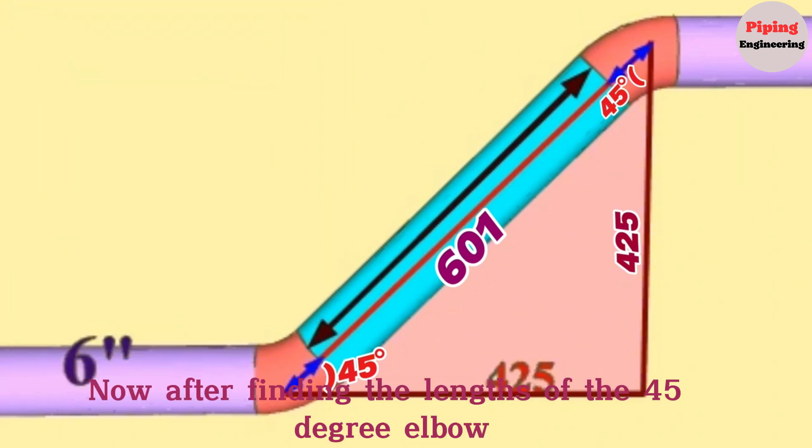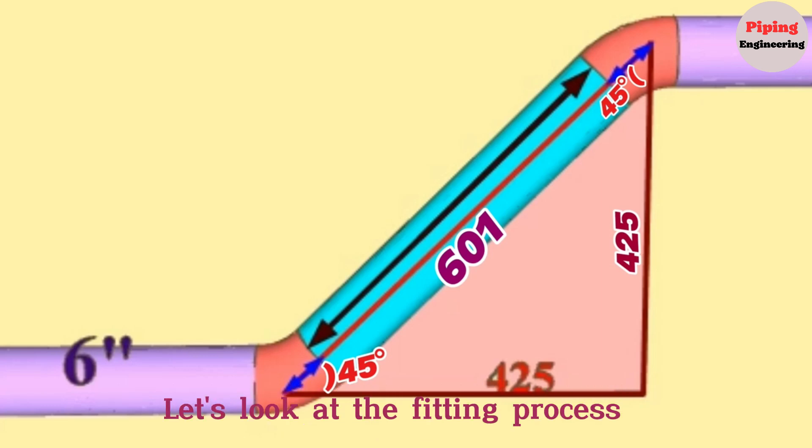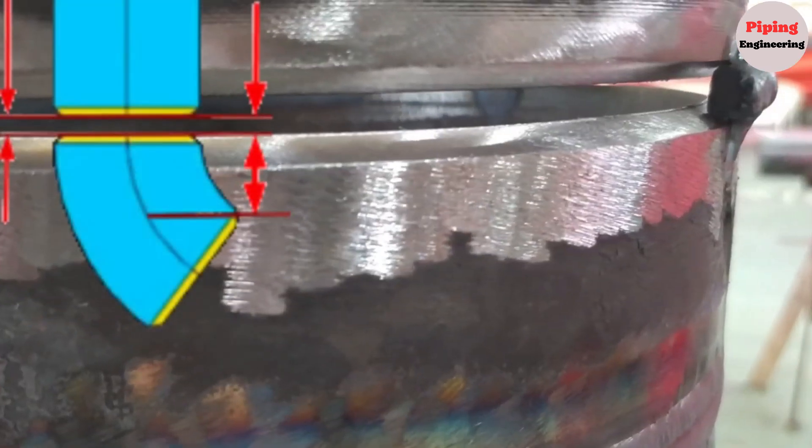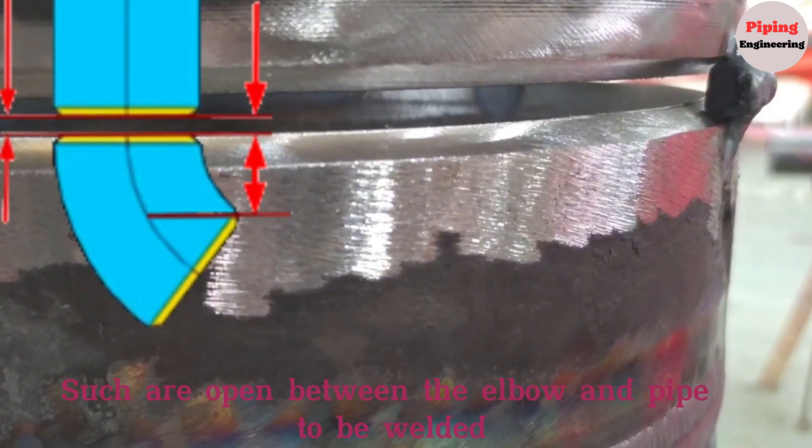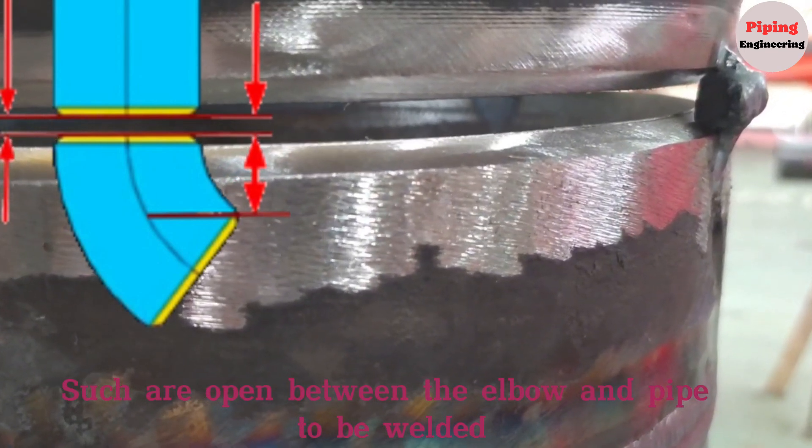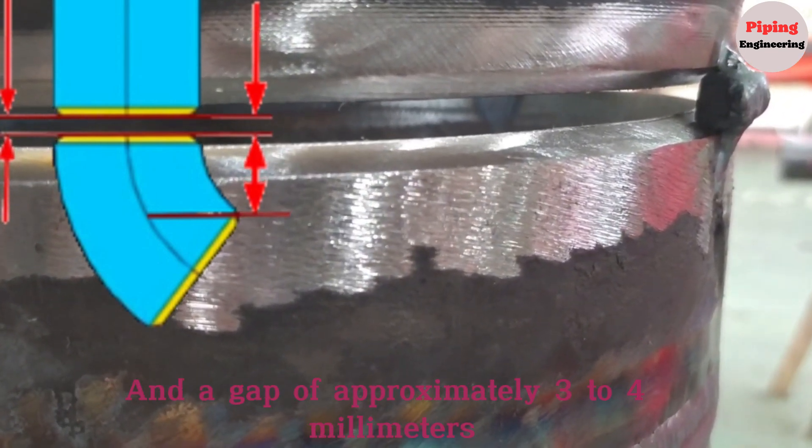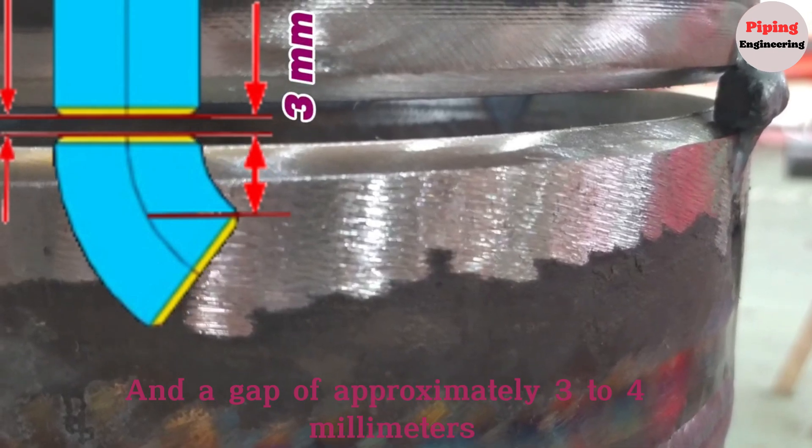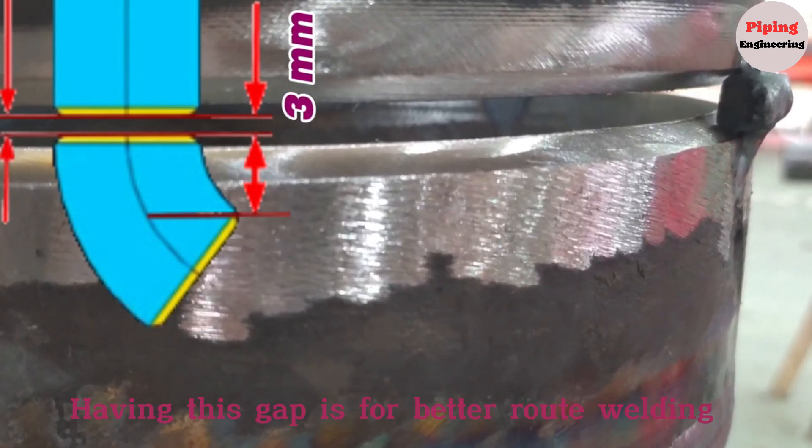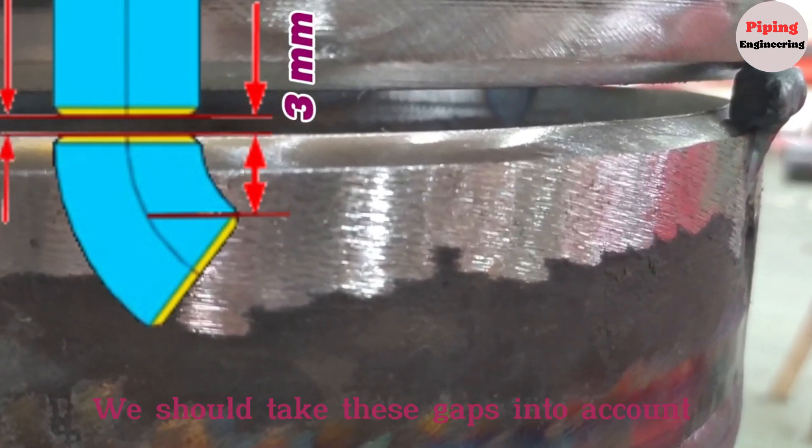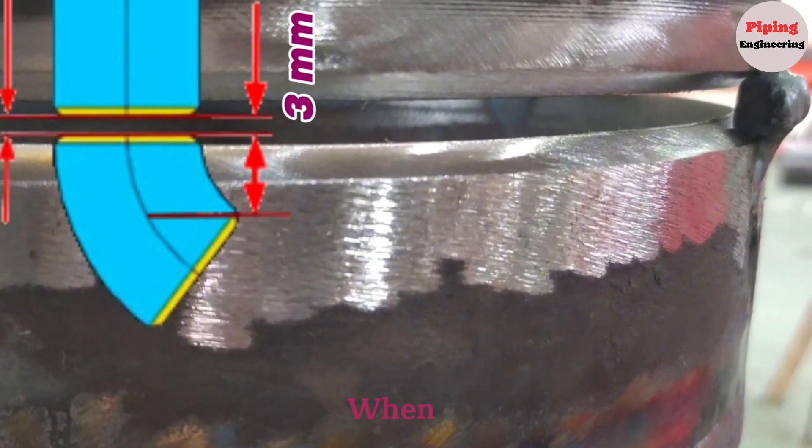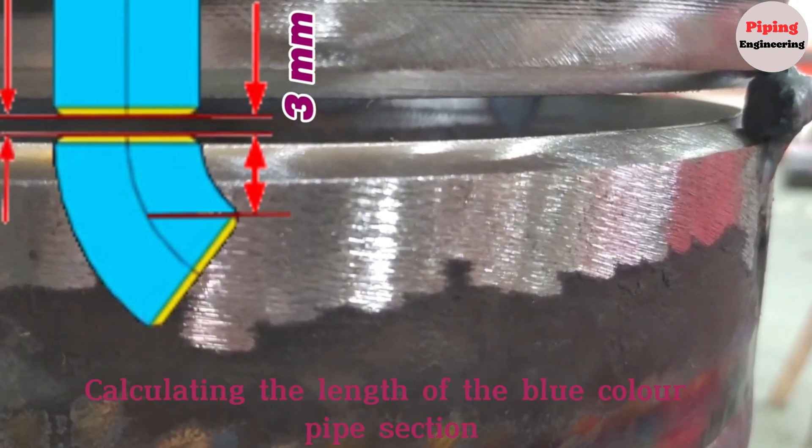Now, after finding the lengths of the 45-degree elbow, let's look at the fitting process of the elbows to the pipe in this pipeline. During fit-up, gaps are opened between the elbow and pipe to be welded, a gap of approximately 3 to 4 millimeters. Having this gap is for better root welding. We should take these gaps into account when calculating the length of the blue color pipe section.